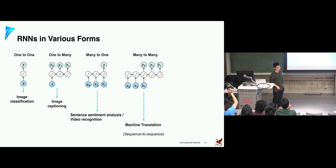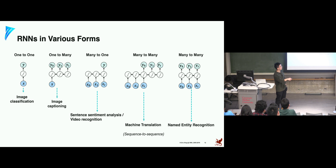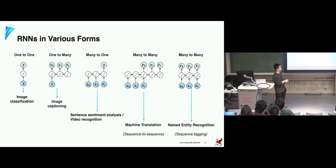There's also many-to-many in a different form, such as named entity recognition: the input is a sentence and for each token we predict a label. In this task, the length of the output is always the same as the length of the input — we call this sequence tagging or sequence labeling. This is different from machine translation, where the output length may differ from the input length.